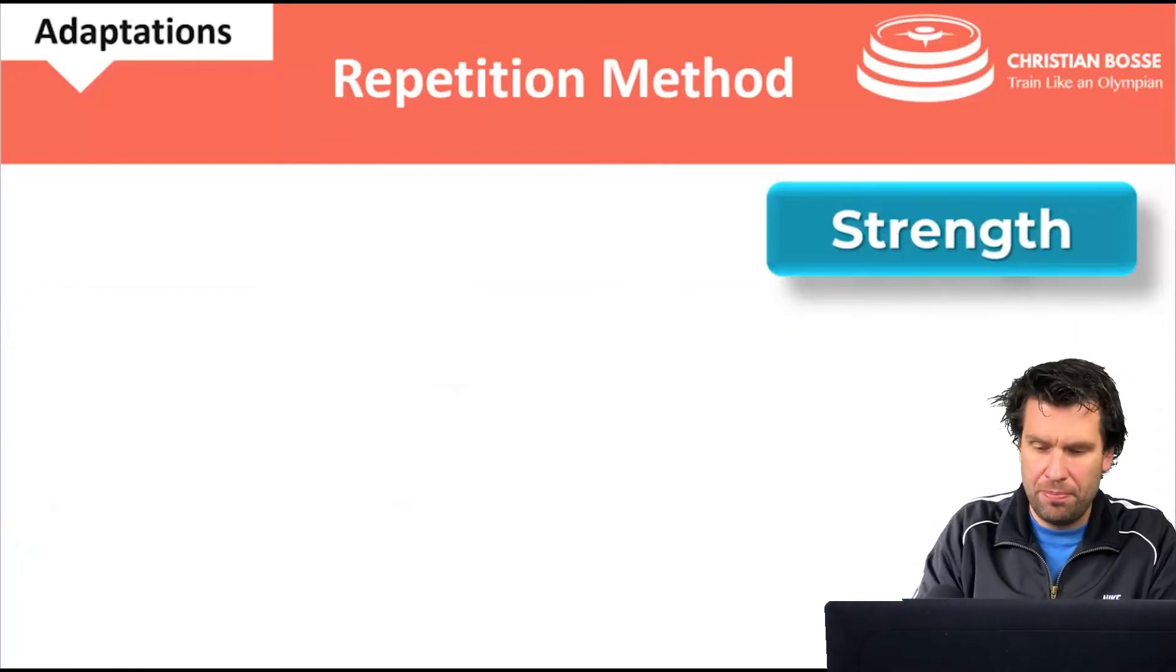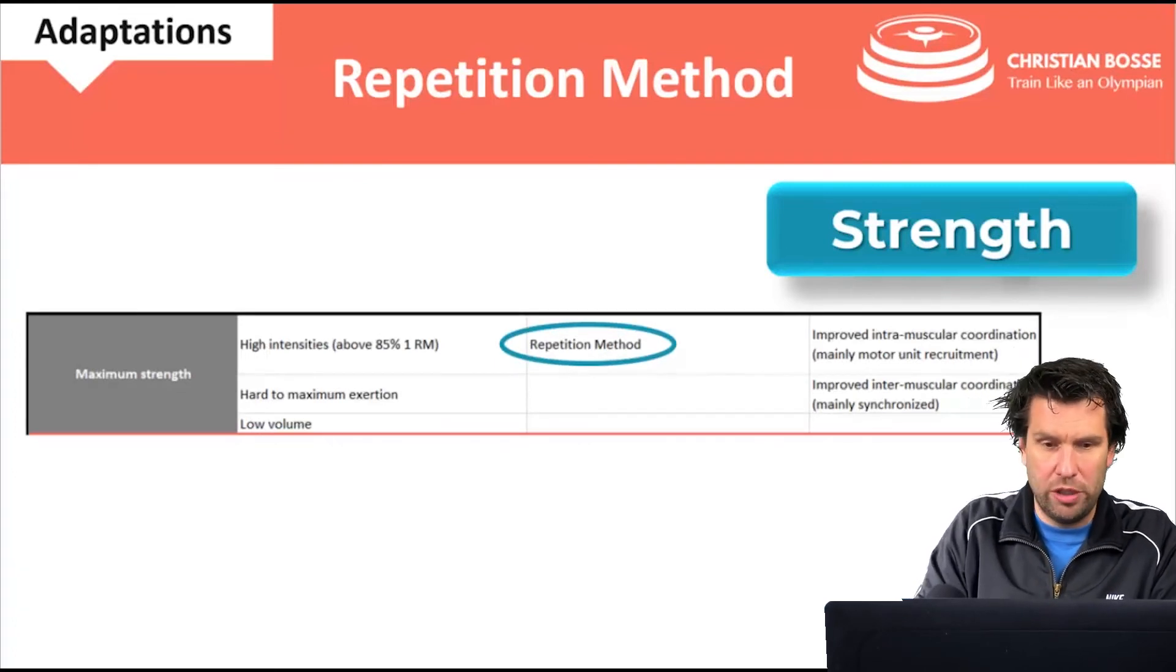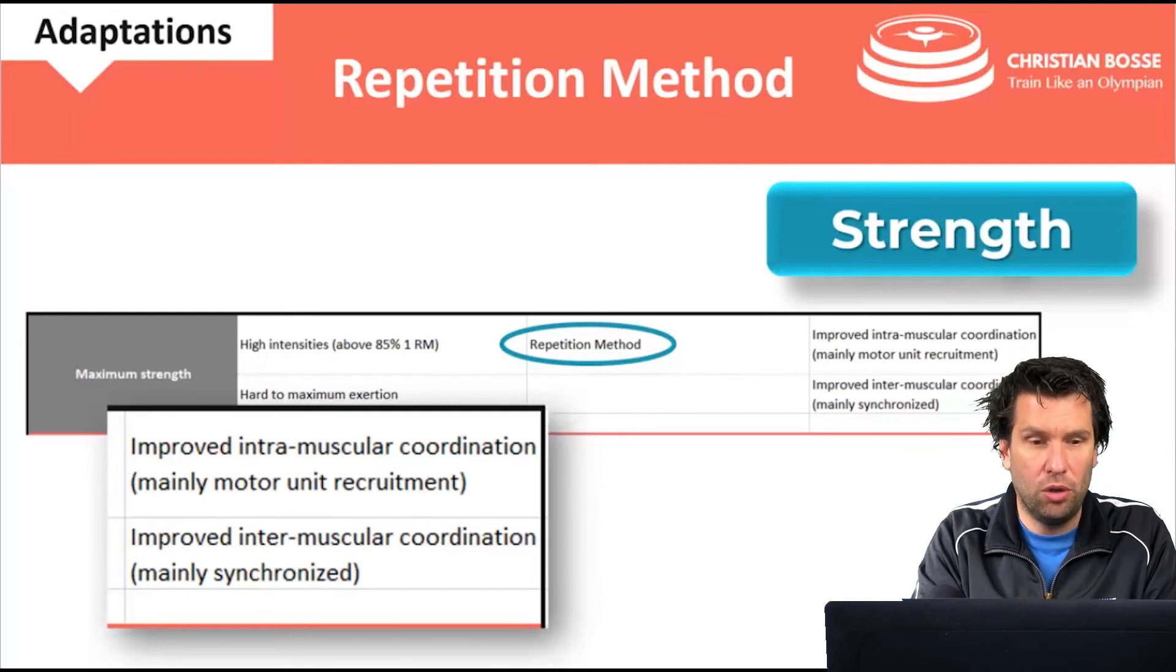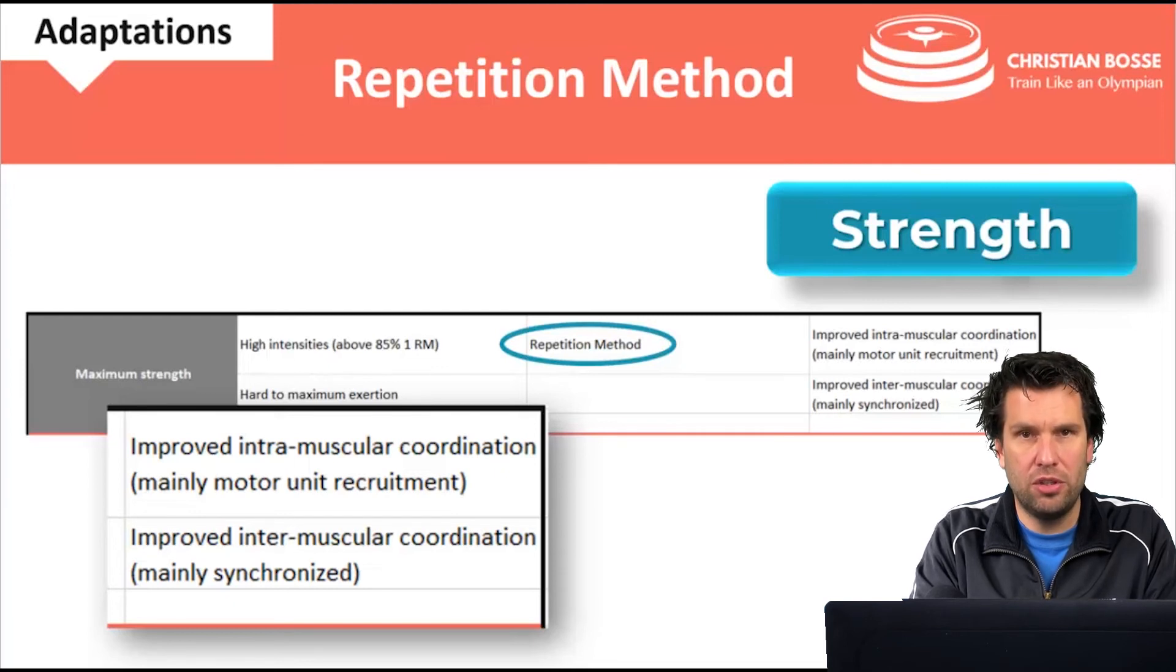Let's look at strength. Examples. If you train for maximum strength, the repetition method could be your method of choice. And also here we have improved intramuscular coordination, mainly recruitment of motor units. And an improved intermuscular coordination, mainly the synchronization.